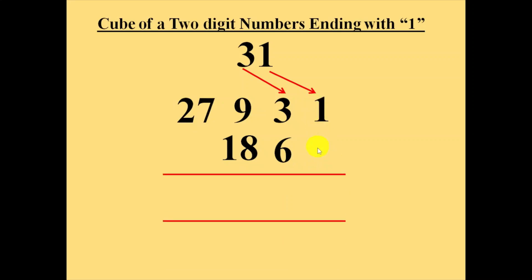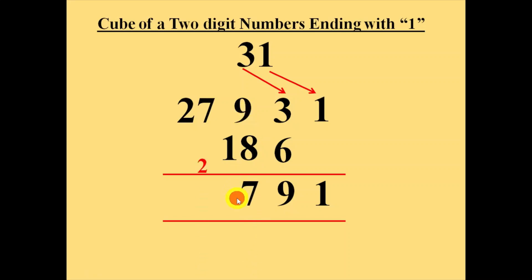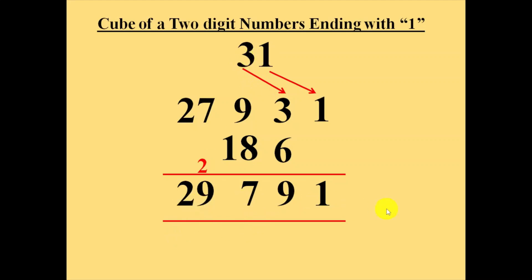1 plus 0 is 1. 3 plus 6 is 9. 18 plus 9 is 27 — note down 7 and carry forward this 2. And then 27 plus 2 is 29. So the cube of number 31 is 29791.